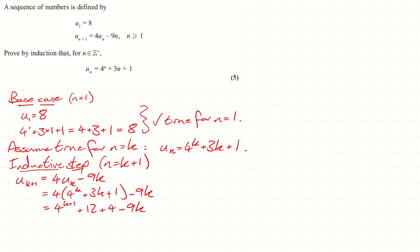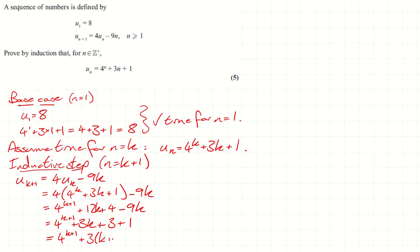I want to fiddle this to make it look like the target formula. So 12k minus 9k is 3k. And then there's a plus four — but I want a plus one floating at the end, so I'm going to write that plus four as plus three plus one. That enables me to see the expression is exactly four to the k plus one, plus three times (k plus one), plus one — which is exactly the formula with k plus one. Fantastic. So it's true for n equals k plus one.